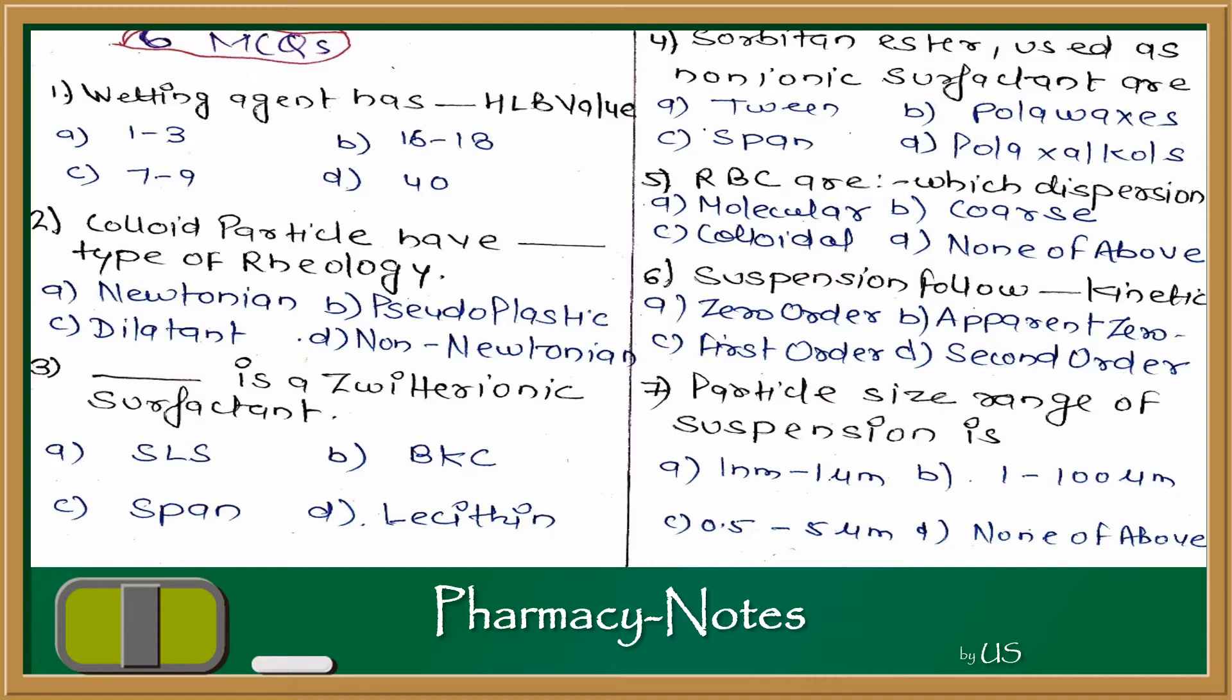Then, let's talk about which is a zwitterionic surfactant. Which example is a surfactant with amphiphilic nature, both anion and cation? If we talk one by one: SLS is anionic, BKC is cationic, Span is non-ionic. Then Lecithin - Lecithin is a zwitterionic surfactant. The answer is D, Lecithin.